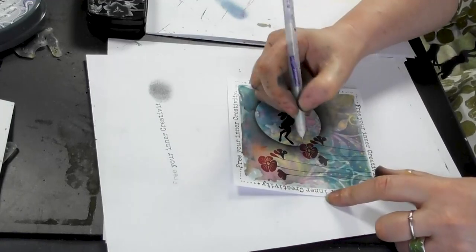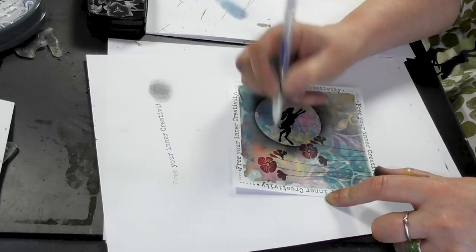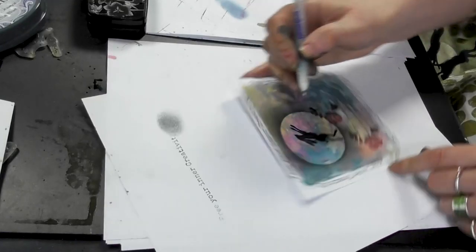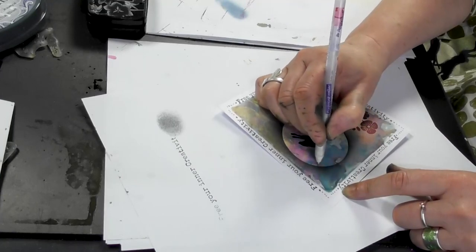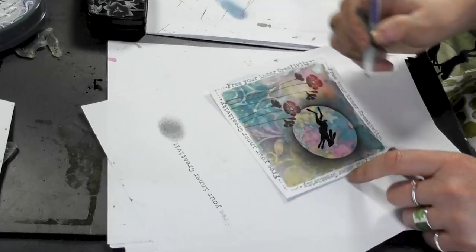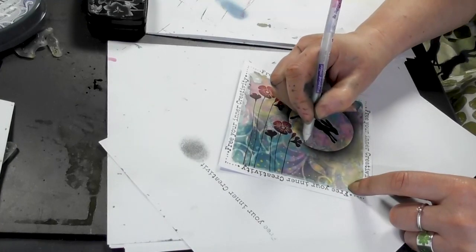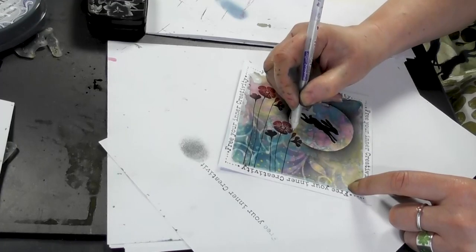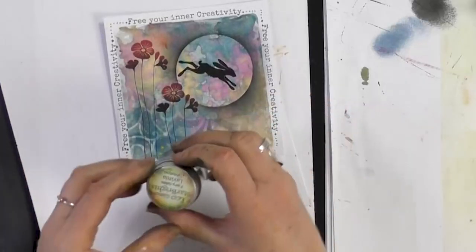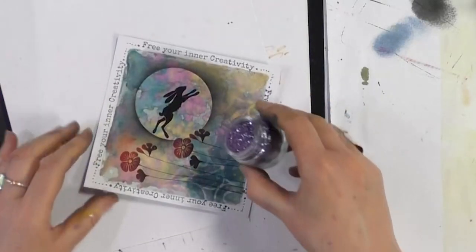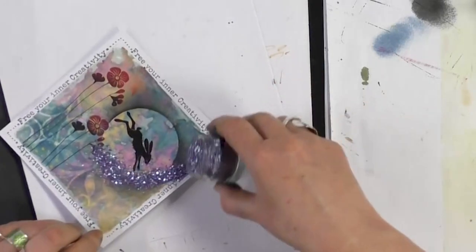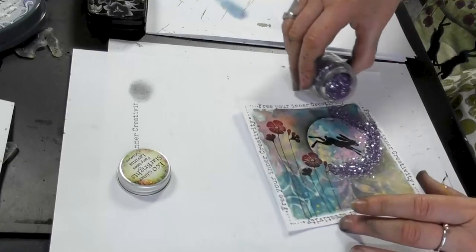And let's just go around the edge of the moon and add a little bit of glue. And we'll go with Fairy Tales, which is a lovely purple lilac sort of colors, real nice pale blue in that as well.